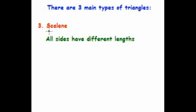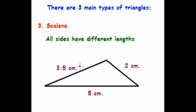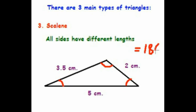The last kind of triangle is called a scalene triangle. Scalene means all the sides have different lengths. In this example, we have five centimeters on the long side, three and a half centimeters on one diagonal, and two centimeters on the other diagonal. In a scalene triangle, all sides have different lengths, and all of the angle measures are going to be different too — because the only way to get all different sides is to have none of the angles be the same. Just like all triangles, the angles add up to 180 degrees.